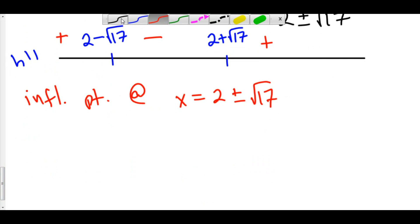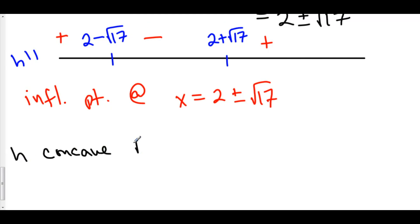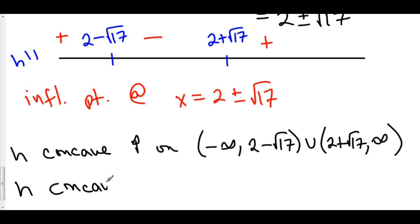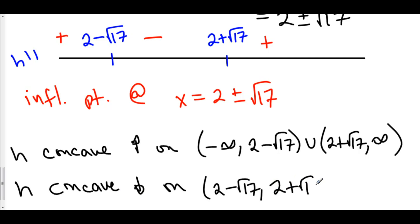Furthermore, h is concave up on the interval from negative infinity to 2 minus √17 and from 2 plus √17 to positive infinity. And h is concave down on the interval from 2 minus √17 to 2 plus √17, because that's where our second derivative is negative. H is concave up where the second derivative is positive.